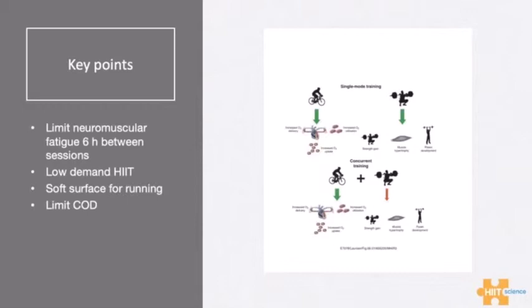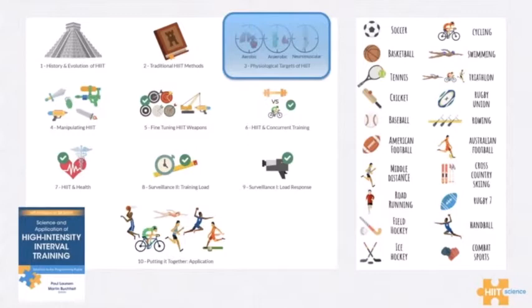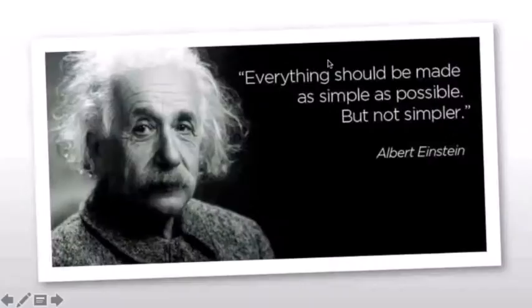Going back to low-demand HIT — these metabolic conditioning sessions performed in the 24 hours prior to strength training should have lower neuromuscular demands with lower absolute or relative work intensities, but they might need to be longer. And that really leads us to the next section where we step back and appreciate the different physiological targets of HIT metabolic conditioning, and learn how we can manipulate HIT sessions slightly to get different degrees of aerobic, anaerobic, or neuromuscular strain within them.